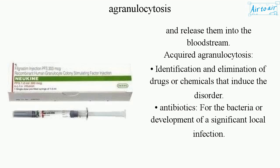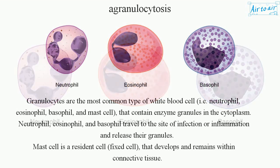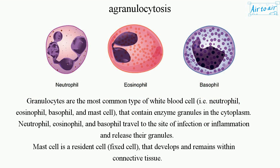To address the bacteria or development of a significant local infection. Granulocytes are the most common type of white blood cell — including neutrophils, eosinophils, basophils, and mast cells — that contain enzyme granules in the cytoplasm. Neutrophils, eosinophils, and basophils travel to the site of infection or inflammation and release their granules. The mast cell is a resident fixed cell that develops and remains within connective tissue.